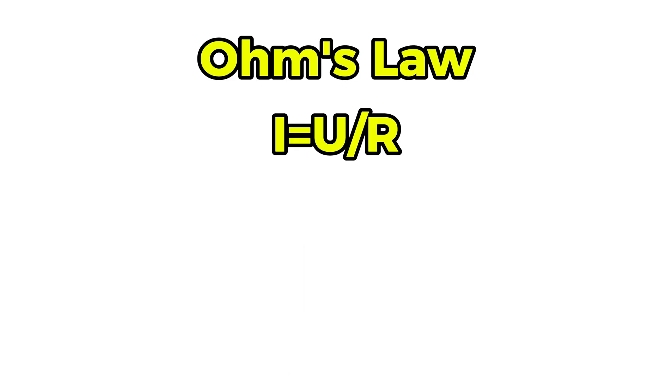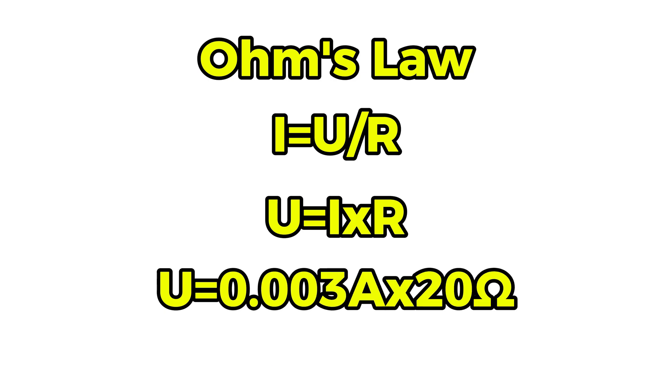We must read on the EHA 3 milliamps at most. If you want to measure voltage at this stage we apply Ohm's law and we get the formula U equals I times R. We will get U equals 0.003 times 20 ohms.